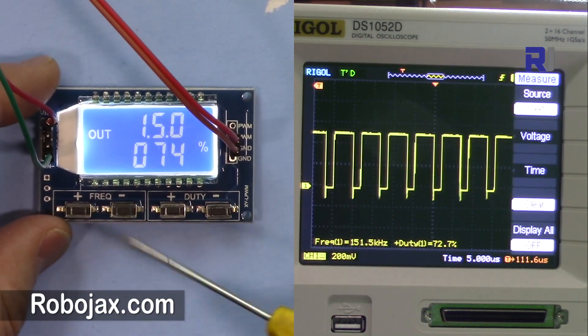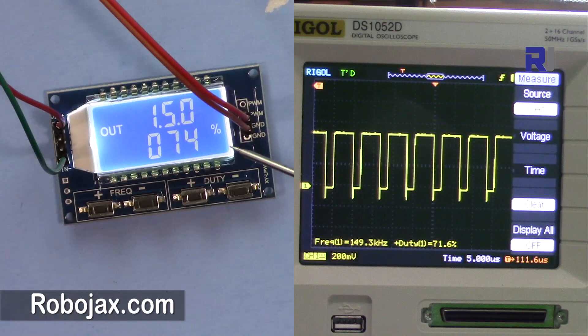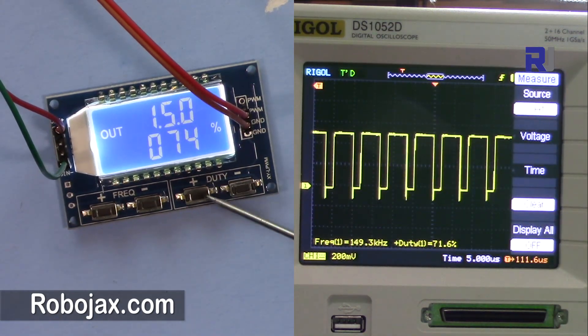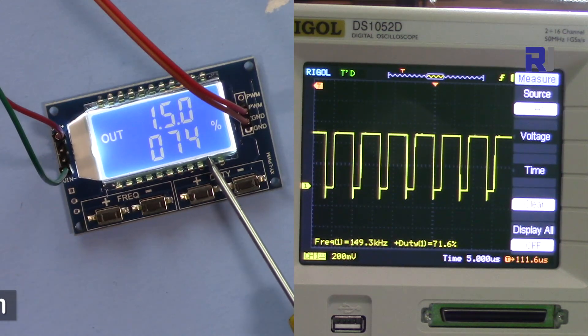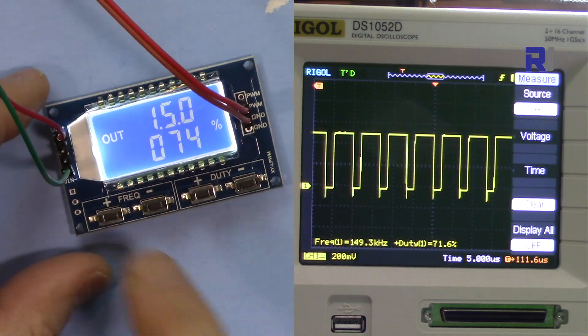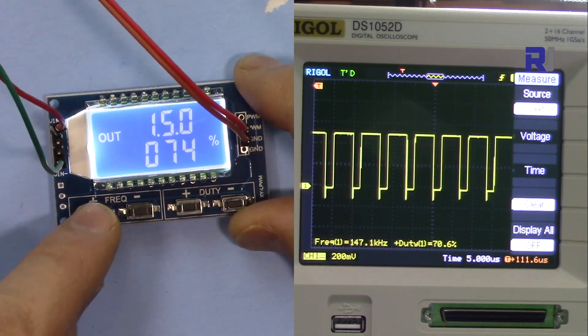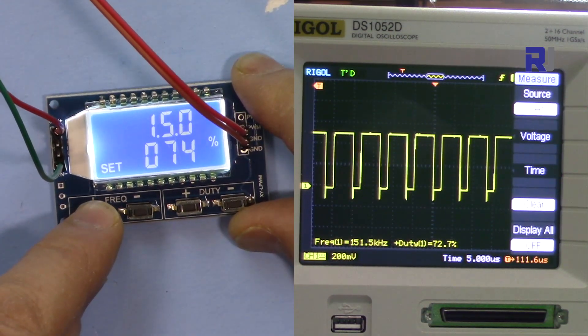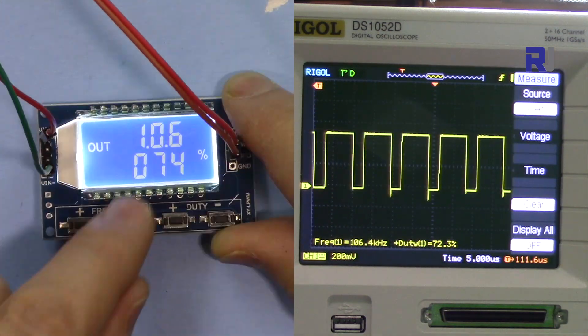I have connected the input to 5 volts, and the signal and ground are connected to this oscilloscope. At the bottom it shows the frequency and duty cycle. Here it shows 74% and we see here 72.1 or 74%. The frequency is 150 kilohertz. Let me change the frequency and see what we read. 450 is the maximum kilohertz, and then I'm going down to 100 kilohertz.